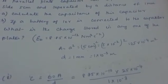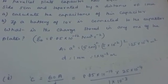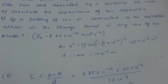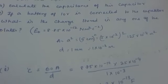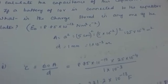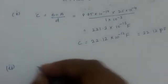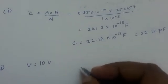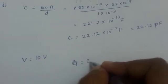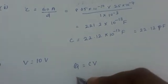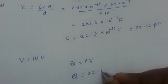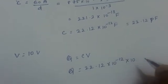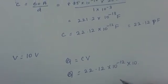Now for the second part: if a battery of 10 volt is connected to the capacitor, what is the charge stored in any one of the plates? The voltage of the battery is given as 10 volt. Charge is asked. Charge can be calculated by the formula Q is equal to C into V. So Q is equal to 22.12 into 10 raised to minus 12 into 10.